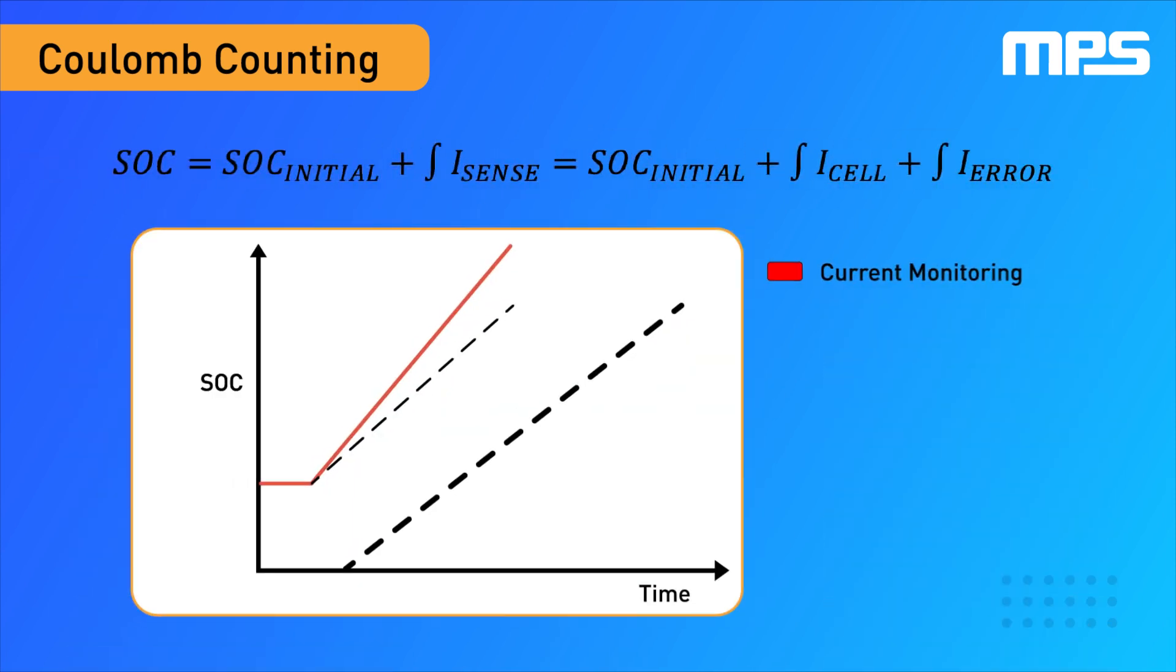The first is that Coulomb counting cannot correct initial SOC estimates that are not accurate. The second is that any error in the measurement during sensing or signal processing will also be integrated, causing the SOC estimation to drift over time. In summary, this method does not guarantee convergence with the true SOC.